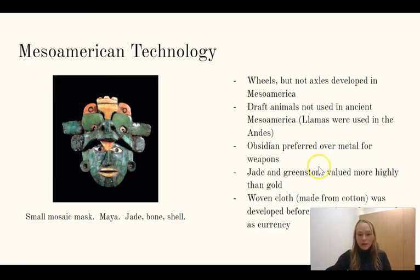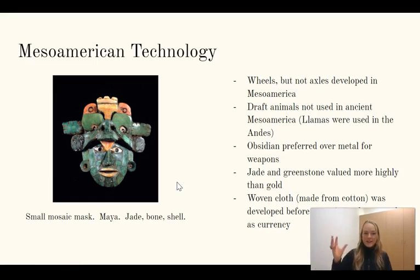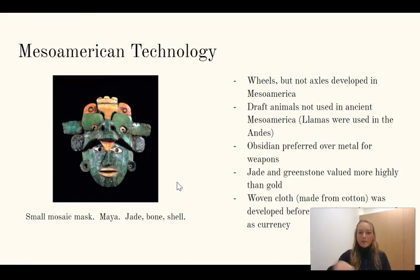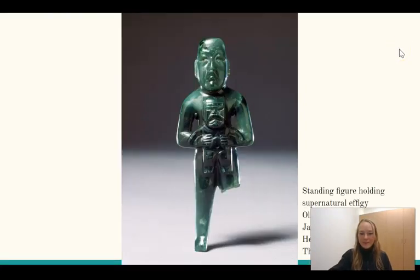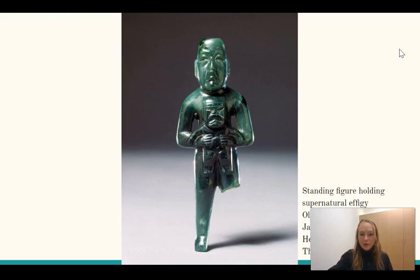Not all the stone used is technically jade, but if it had that nice greenish color and was easily worked, it was considered the same as jade. Woven cloth from cotton in Mesoamerica — and wool from llamas in the Andes — was actually developed before ceramics. Fine woven cloth held great value and could be used as currency, with tribute paid in cloth. This jade standing figure from the Olmec culture, holding a supernatural effigy, is an example of the fine craftsmanship in Mesoamerican jade objects.